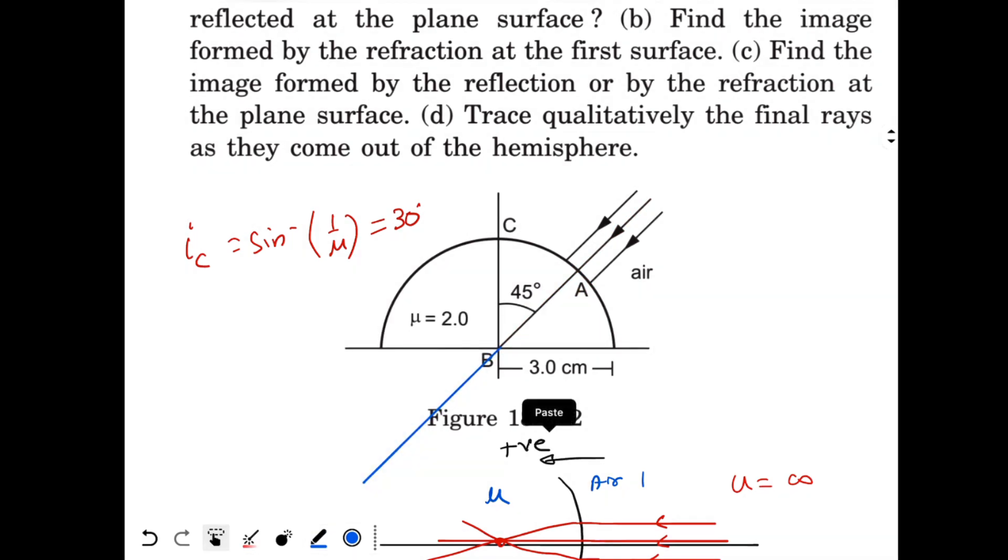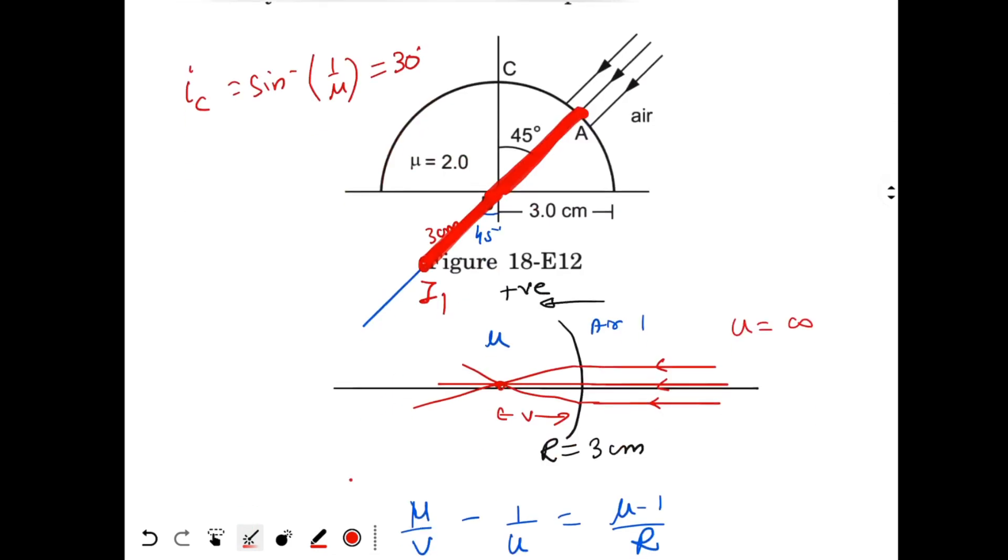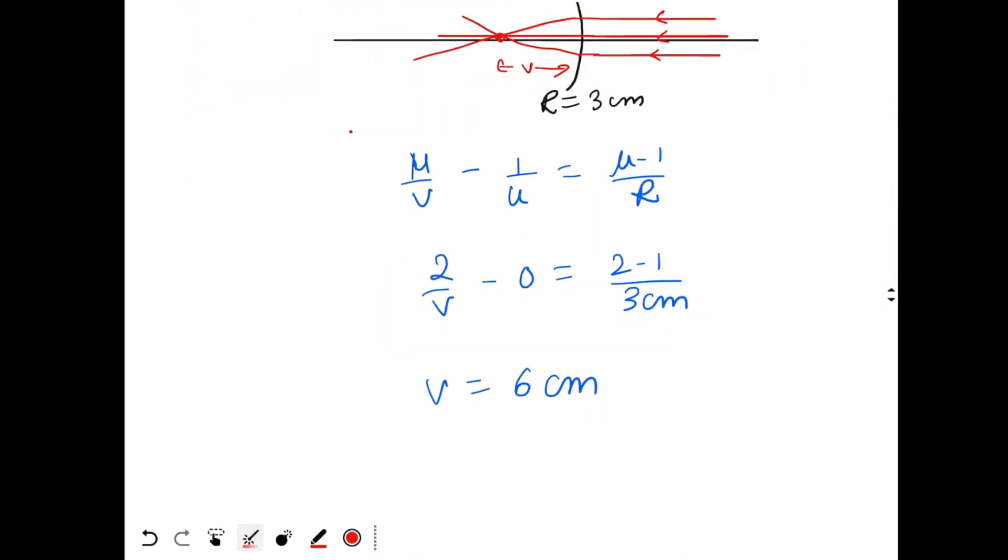So this will be again 45 degrees. This is 3 cm. Image is formed at 6 cm from the surface. So we need to go 3 cm further over here. So this is the position of image formed by the spherical surface. I call it I₁. And this will be 3 cm. This distance is 3, this is 3, so total will be 6 cm.